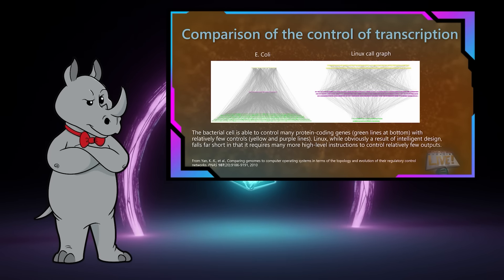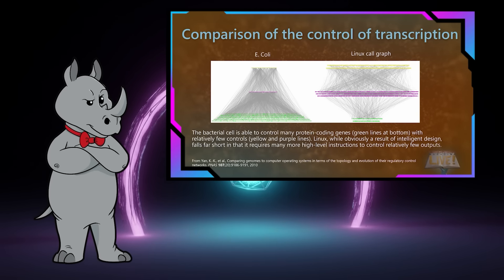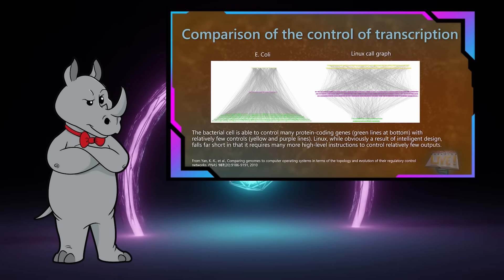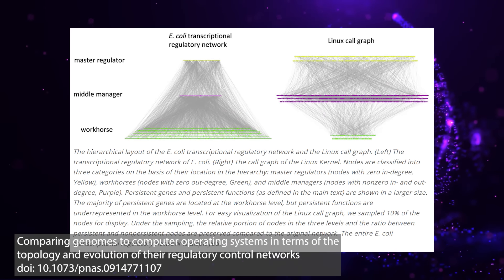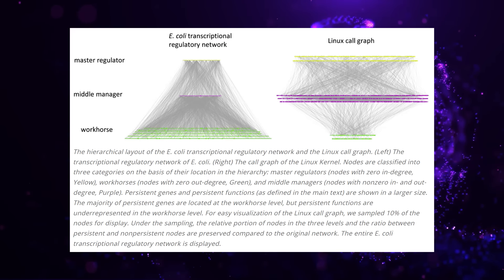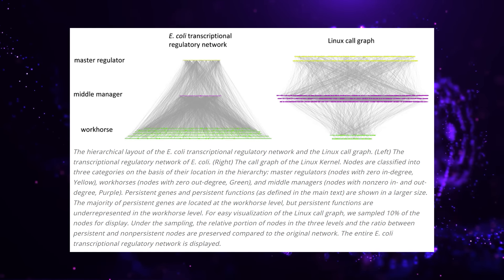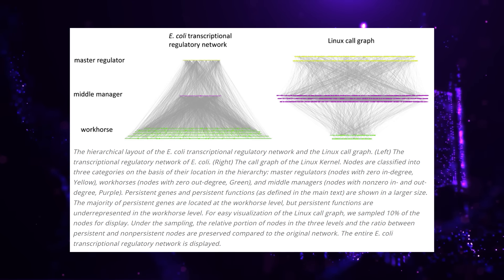Human DNA codes in not just one, not two, not three, but four dimensions — unless you mean something other than it being a three-dimensional molecule that exists in time, that's kind of a well-duh statement. A few years ago, researchers compared the relatively simple E. coli genome with the Linux operating system. They say the E. coli genome uses a few high-level instructions that control mid-level processes, which in turn control a massive number of protein-coding genes, while Linux is much more top-heavy and thus less efficient. But they've completely misrepresented this: the green nodes at the bottom of the E. coli chart are not protein-coding genes — they are nodes of the transcriptional regulatory network with zero out-degree. The yellow nodes at top have zero in-degree, and purple nodes in the middle have a mix of both. Protein-coding genes are located at all three levels.